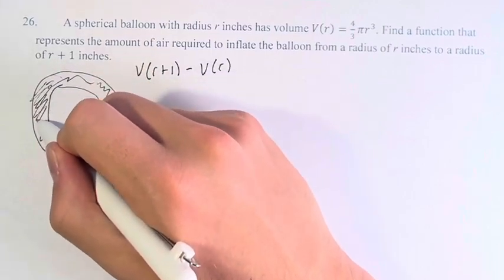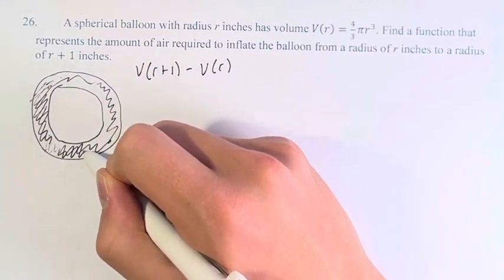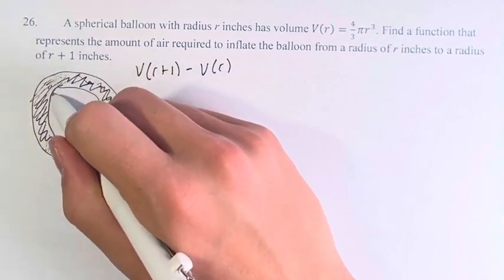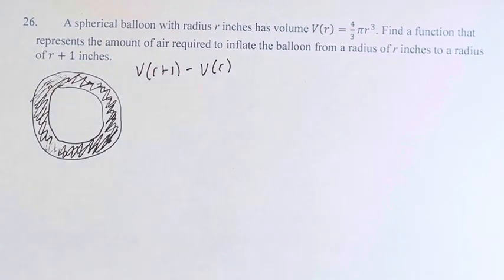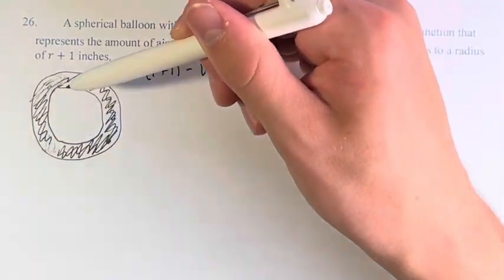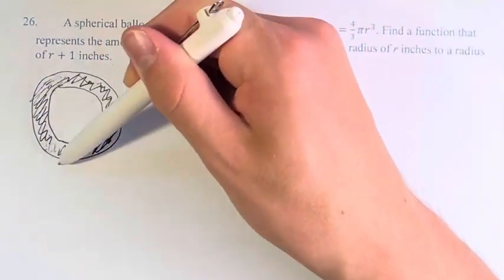Because imagine if you take the whole big circle, which is really a sphere, but you can't exactly draw a sphere on the page, and you subtract this inner circle, what's left is this ring, this shaded ring around it.